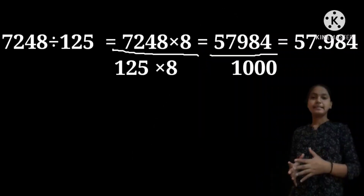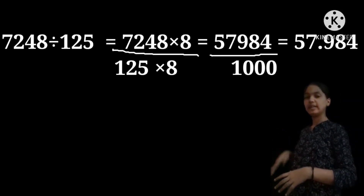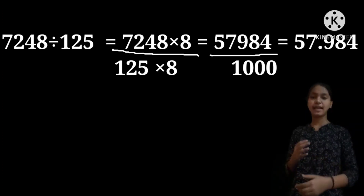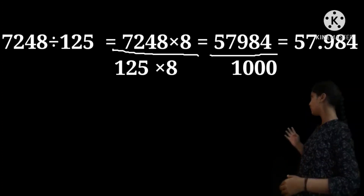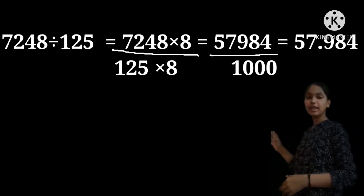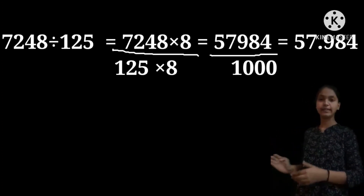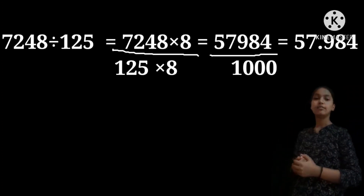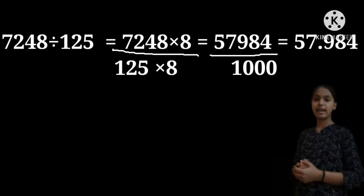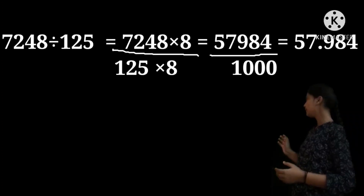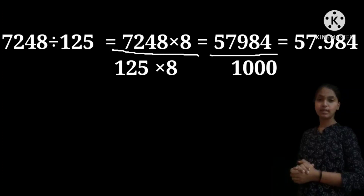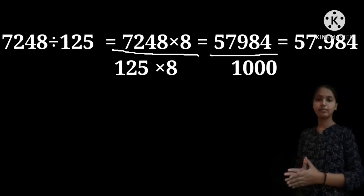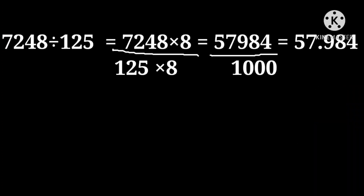Let us see another example: 7,248 divided by 125. We should multiply 8 to the numerator and denominator. So 7,248 into 8, divided by 125 into 8. Let us multiply: 7,248 into 8 is 57,984. I think you understand this problem.